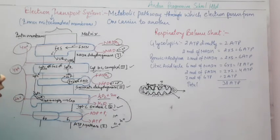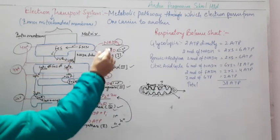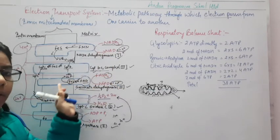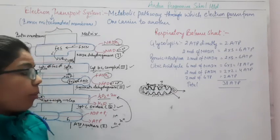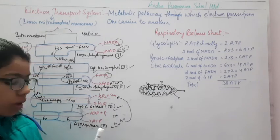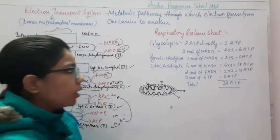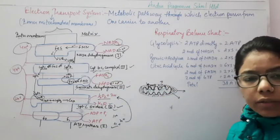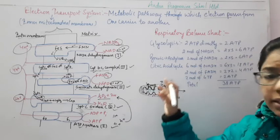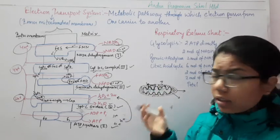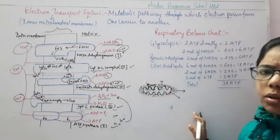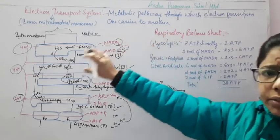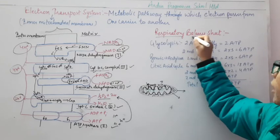ATP synthase has F0 and F1 particles — just like chemiosmotic theory in photosynthesis — where F0 is embedded and F1 is protruding. When protons pass through ATP synthase back into the matrix, ATP is synthesized. The NADH₂ and FADH₂ coming into the electron transport system are thus converted into ATP molecules, which are useful for metabolic activities in the plant cell.